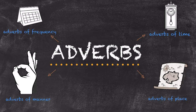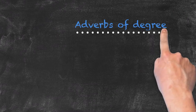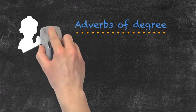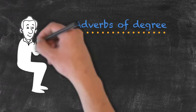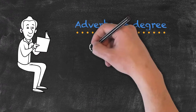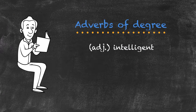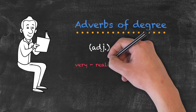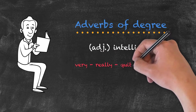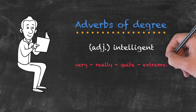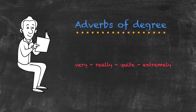There's also another type of adverb, but here we're going to describe adjectives or other adverbs instead of verbs themselves. These are called adverbs of degree. If we were to take the adjective intelligent, we could say he's very intelligent, she's really intelligent, they're quite intelligent, or he's extremely intelligent.